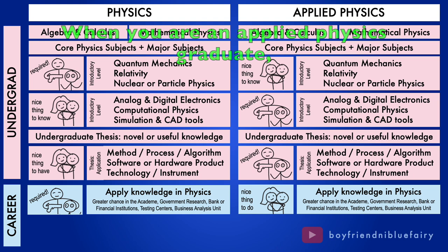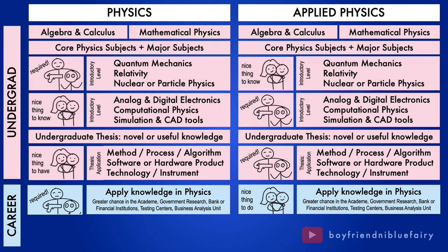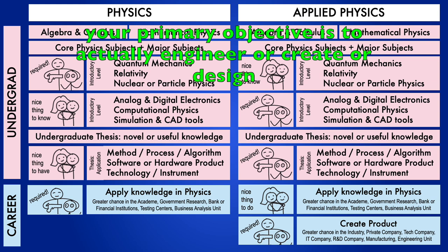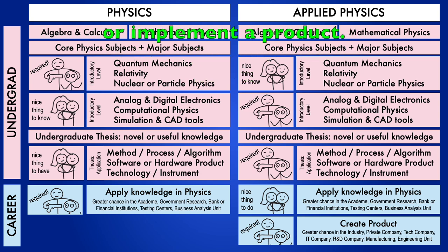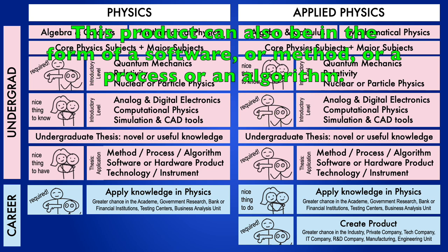When you are an applied physics graduate, the type of work you'll have is not necessarily limited to physics application alone. But if that's the case, then it's just a bonus point for you. Applying your knowledge in physics is just a nice thing to do because your primary objective is to actually engineer or create or design or implement a product. Your product is your work output. Again, I reiterate that such product is not limited to a physical device, chemical product, agricultural product, medical equipment, instrument, machine, etc. This product can also be in the form of a software or method or a process or an algorithm.